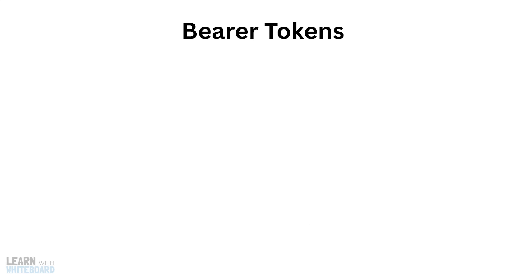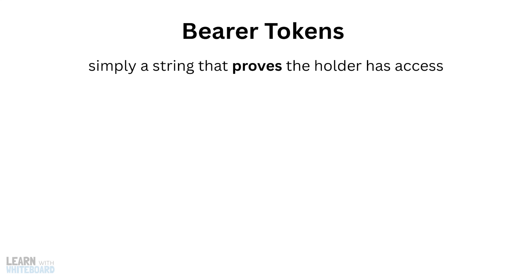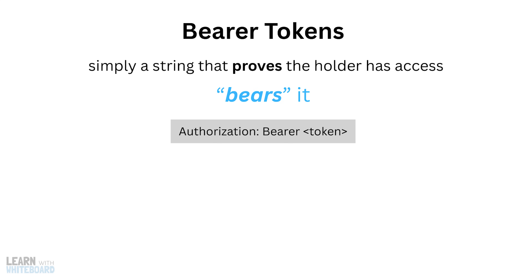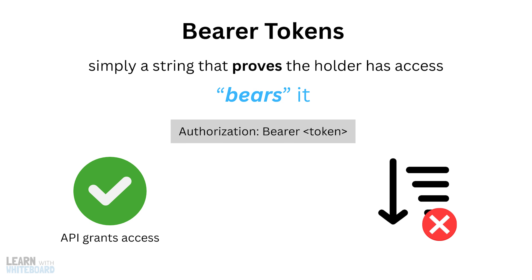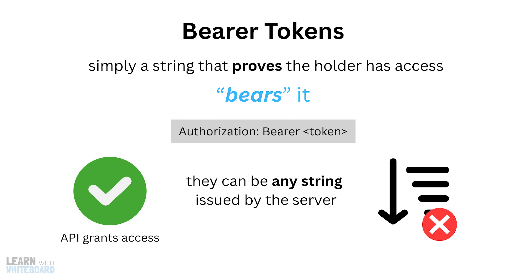Now let's move to bearer tokens. A bearer token is simply a string that proves the holder has access — whoever presents it, or bears it, can reach the resource. You send it in the header like this. If the token is valid, the API grants access. These tokens don't have to follow a specific format, as they can be any string issued by the server.